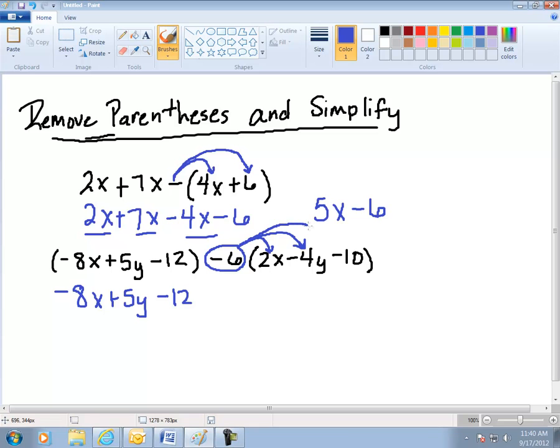Don't just distribute through 6, you got to distribute negative 6. One way to remember this is the sign always goes to the thing it's right to the left of, right next to, to the left of.